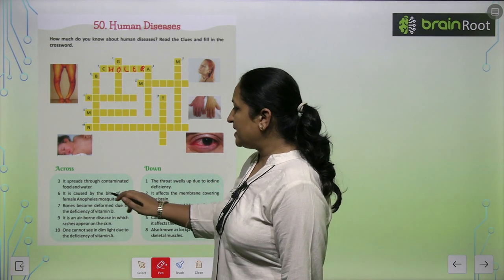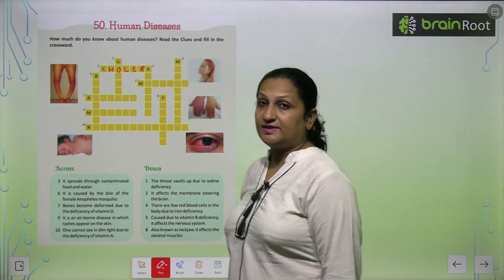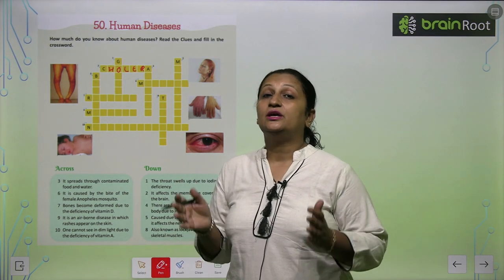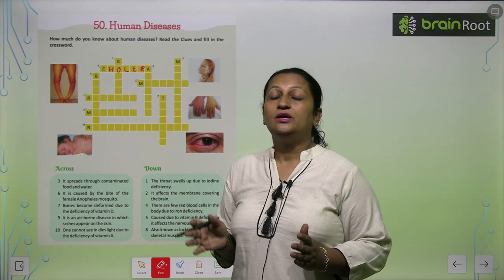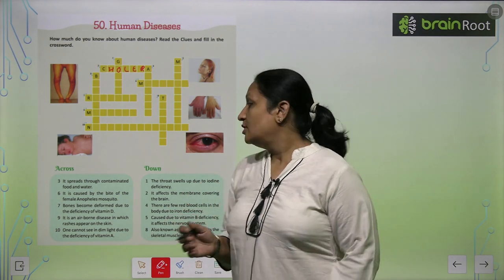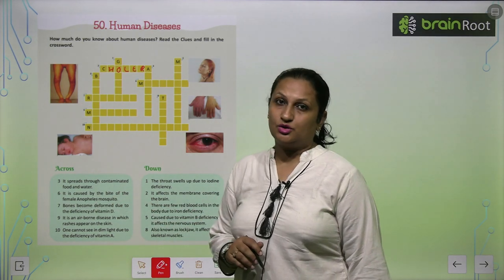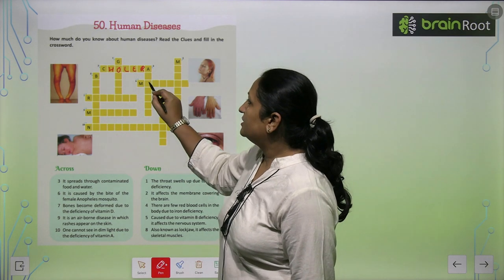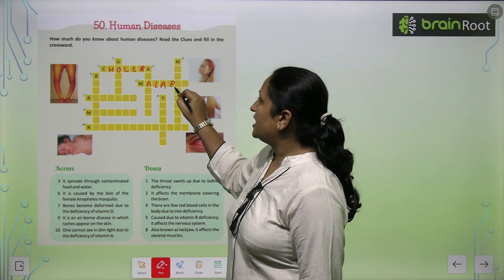It is caused by the bite of the female Anopheles mosquito. This is very common when it rains, or when mosquitoes are breeding a lot — that's when this disease spreads. And this is because of the female Anopheles mosquito. So its name is Malaria.